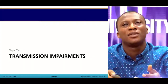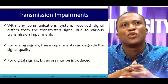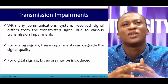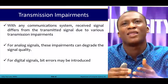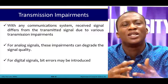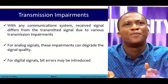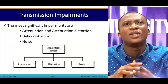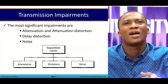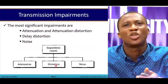Now we look at transmission impairments. With any communication system, the received signal differs from the transmitted signal due to transmission impairments. For analog signals, impairment can degrade the signal quality. For digital signals, bit errors are introduced. The most significant impairments are: attenuation and attenuation distortion, delay distortion, and noise.